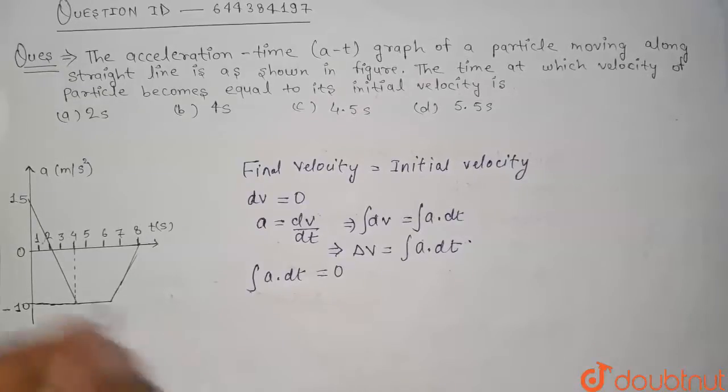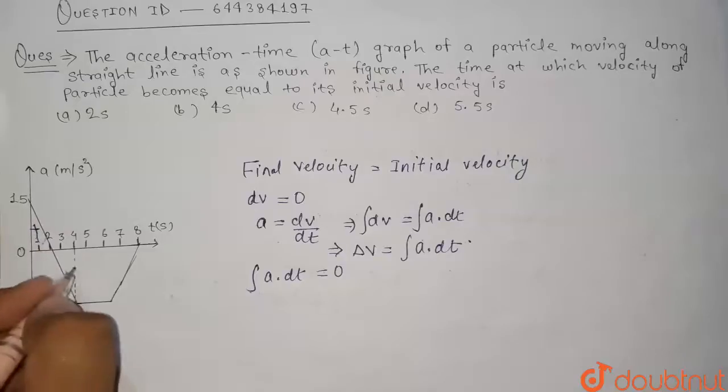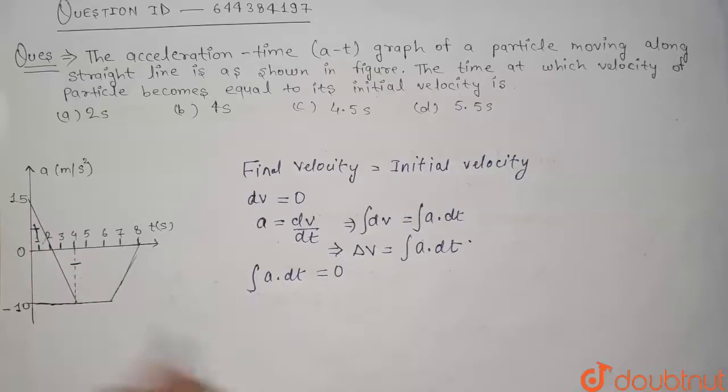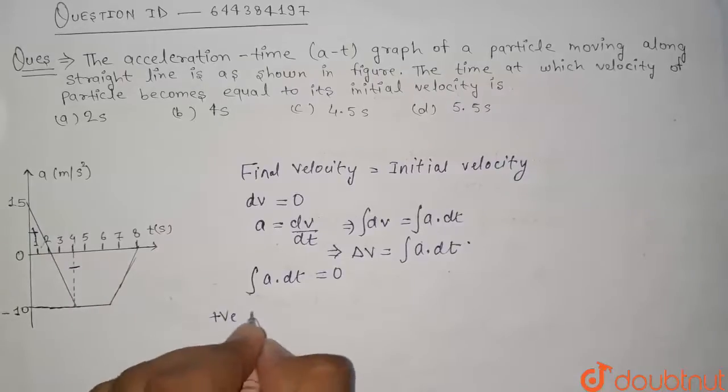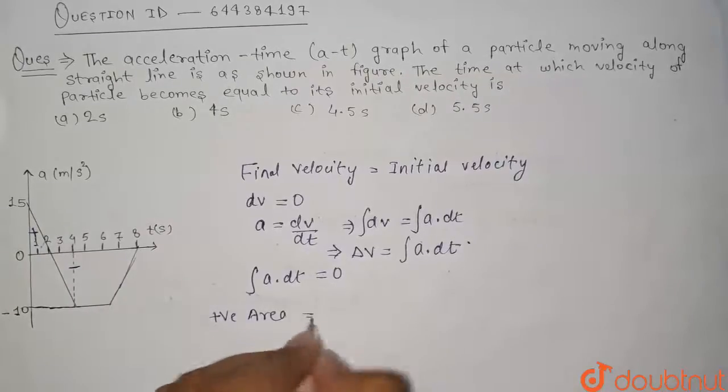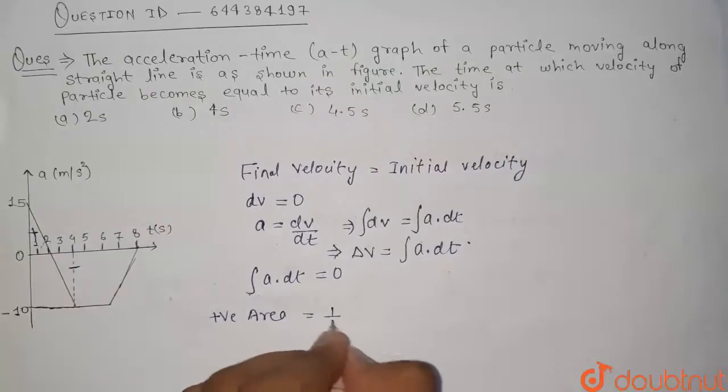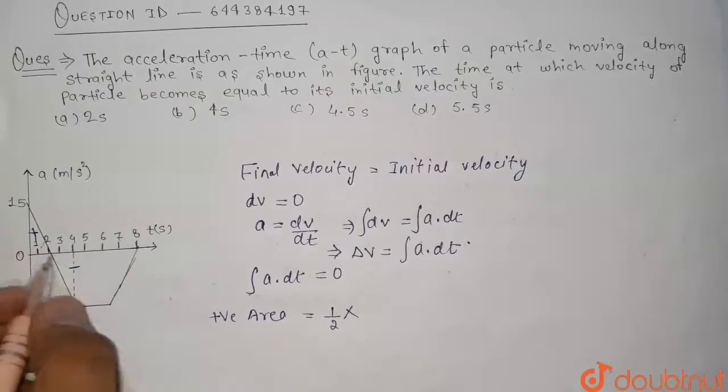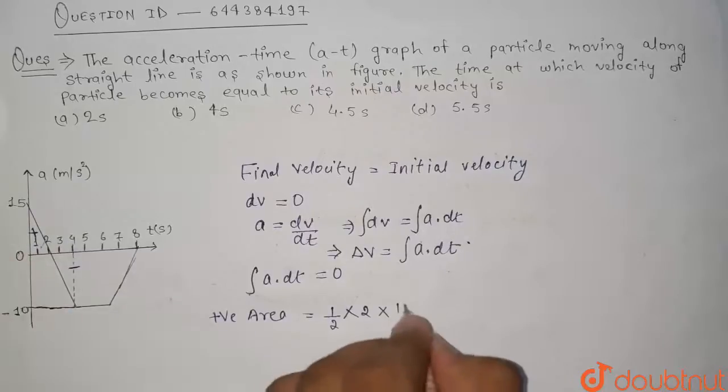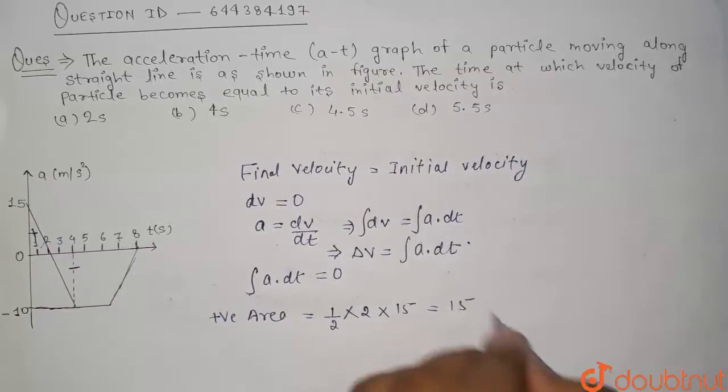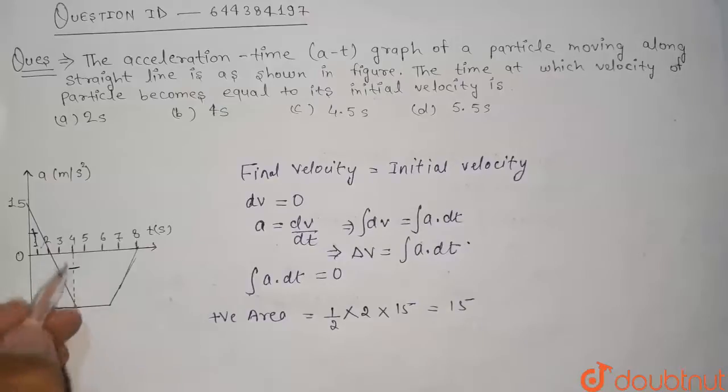Now what is the positive area? This area is positive and this whole area is negative. So firstly we have to find what is the positive area. Since this is triangle, so it is half base. Base is 2 into height. Height is 15, so this comes up to 15.